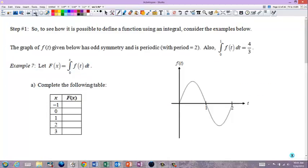Consider the examples below. Okay, it says the graph of f of t given below has odd symmetry and is periodic with period 2.